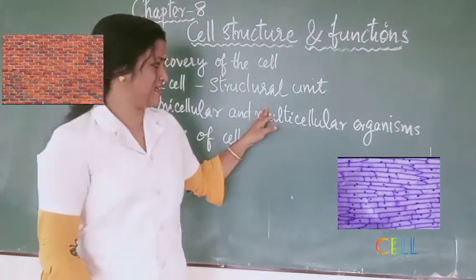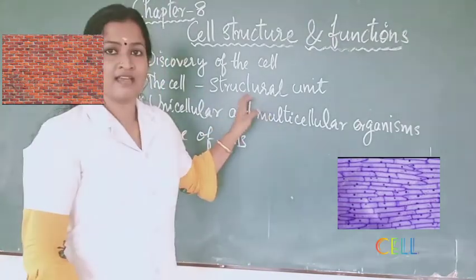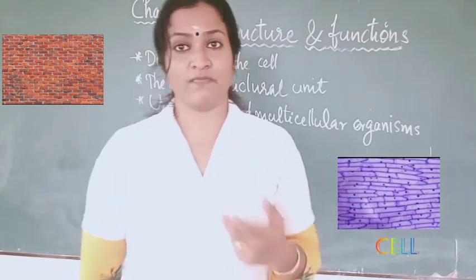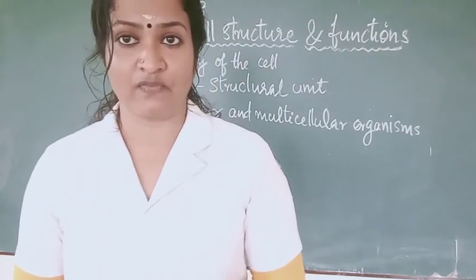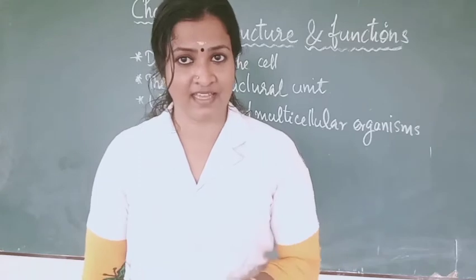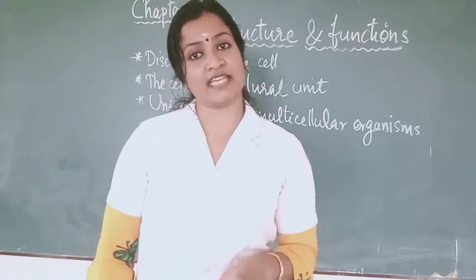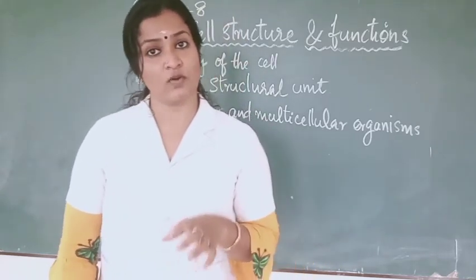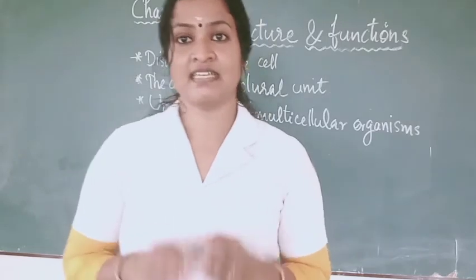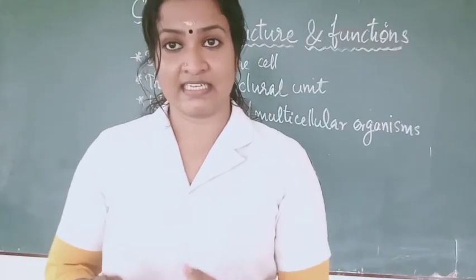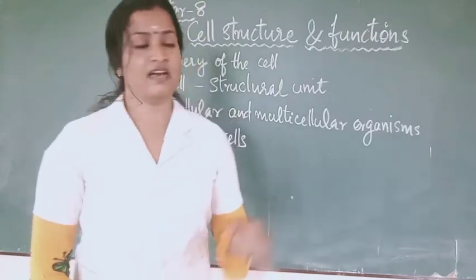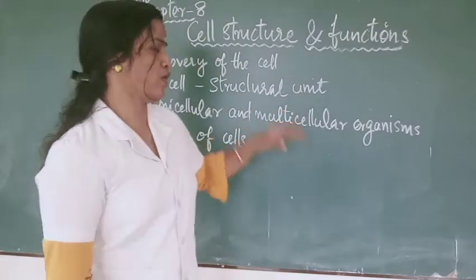It's an important point. We can see different types of buildings but they are all made up of the same material, that is brick. Likewise, living things' bodies are also made up of the same material, that is cells — the smallest single structural unit of the living organism.